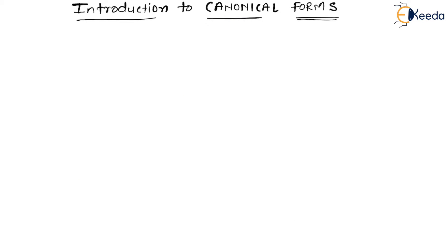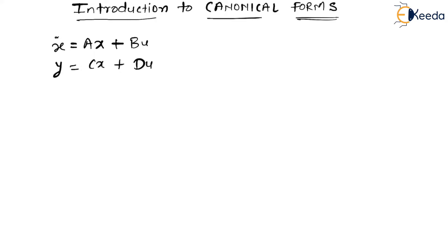So now, if you have studied so far, we have seen that we have a state space model which is nothing but x-dot equal to Ax plus Bu, and we have y equal to Cx plus Du. This is our state space model. Now in the previous session we have seen how to get the transfer function out of the state space model.